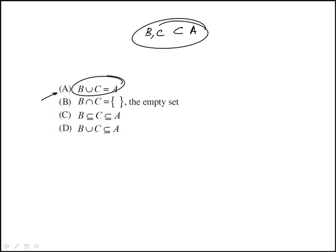B union C equals A. Well, not necessarily, because you can have elements in A that are not present in either B or C.